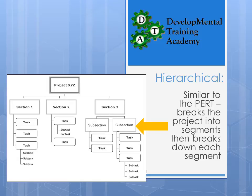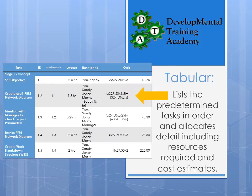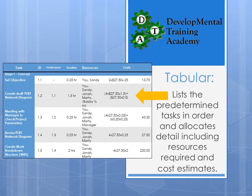However, there's a lot of information missing from the hierarchical format that the tabular work breakdown structure can provide. A tabular structure lists your predetermined tasks — from your PERT chart and so on — in order, and allows you to allocate details to those tasks, including resources such as people, materials, and money, and then generate cost estimates for each particular task. There's a sample you can see there, and we're going to go through each column and each section in detail.